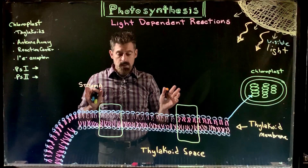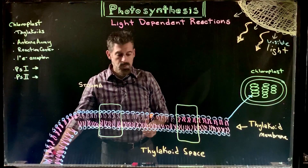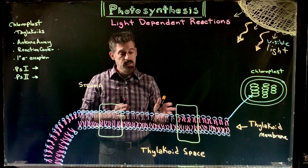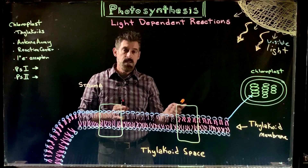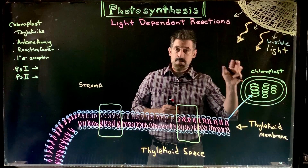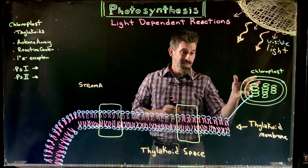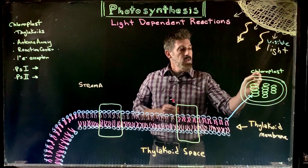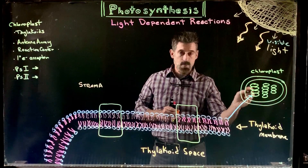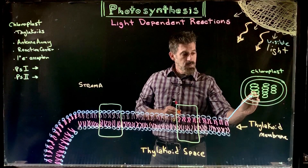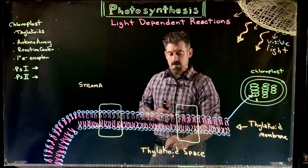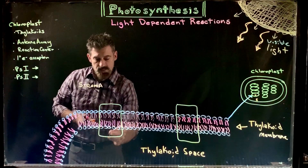We're going to continue and get more details here. We're going to look at the specific photosystems and how electrons flow between them, and how and where the ATP and NADPH are made. The chloroplast is inside the cytoplasm of the plant cell. It has an outer membrane, inner membrane, and then the thylakoid membrane. The space outside is the stroma, and inside the innermost space is called the thylakoid space.